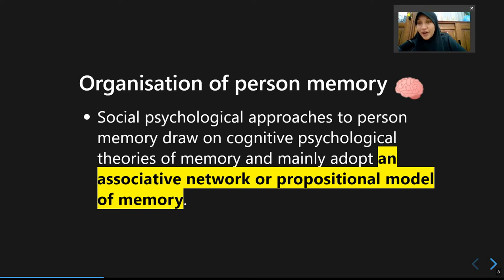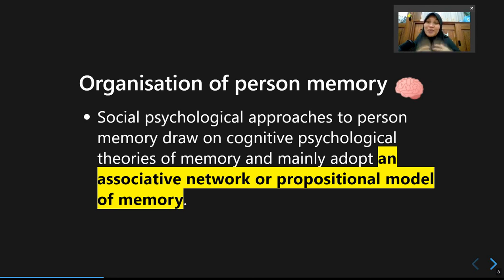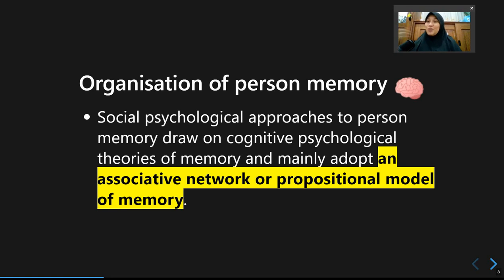One of the most prominent theories in explaining how we use person memory in social psychology is the associative network or propositional model of memory. This means that we store information about other people in our lives just like a spider web — we try to form a web of association between those pieces of information. We keep memories about people by seeing them as living objects with certain roles or certain dispositions of traits, or their disposition to behave in certain ways.